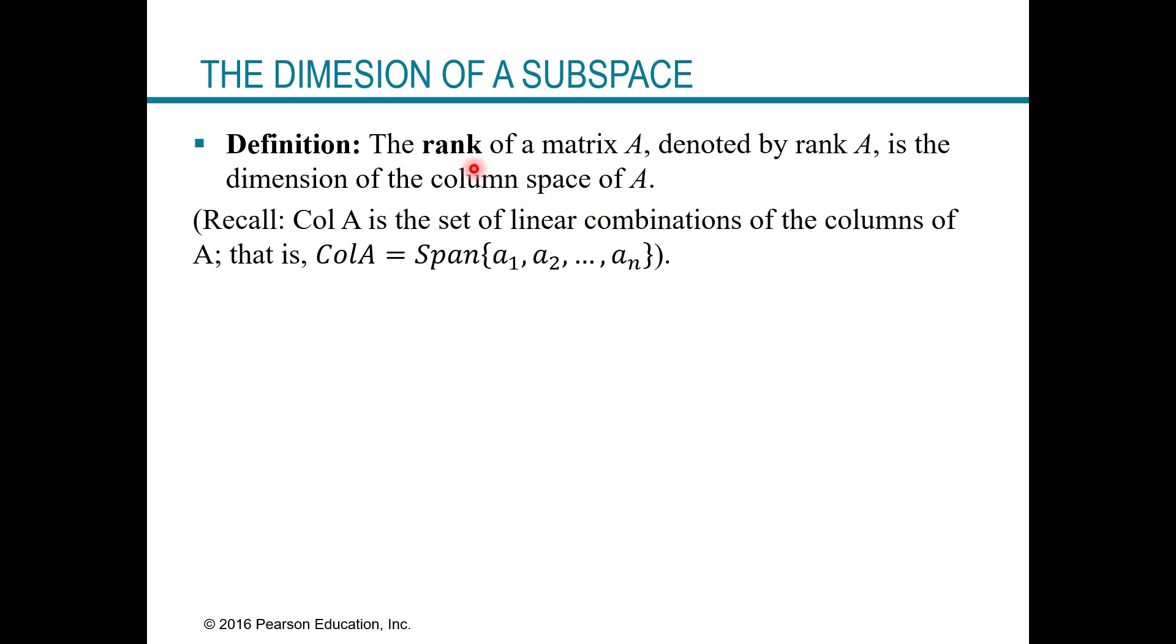Now let's define rank. So the rank of a matrix A, denoted rank A, is just the dimension of the column space of A. And reminder that the column space is just the set of linear combinations of the columns of A. And so another way to write that is that the column space of A is the span of the columns of A.